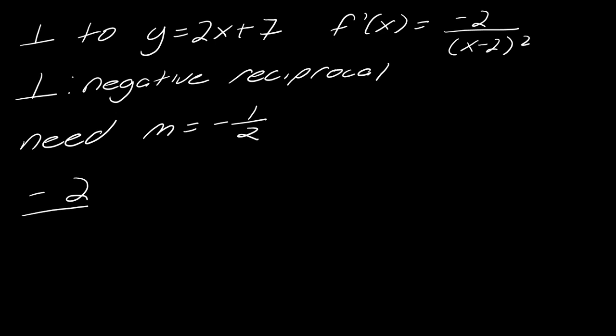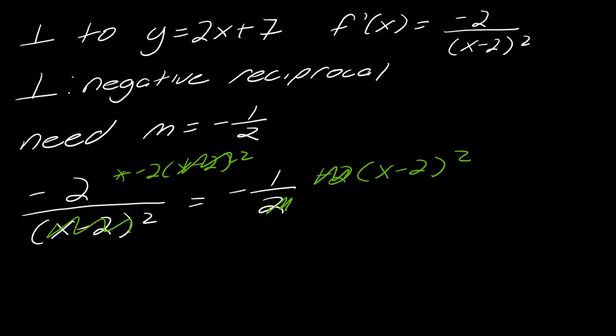So I've got negative 2 over x minus 2 squared equals negative 1 half. Now I'm just going to solve this. I'll multiply both sides by negative 2 times x minus 2 squared. So I'm basically multiplying by all the denominators. The x minus 2s cancel out, and the negative 2s cancel out. So I'm left with 4 equals x minus 2 squared.